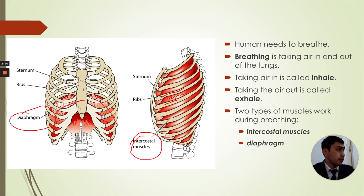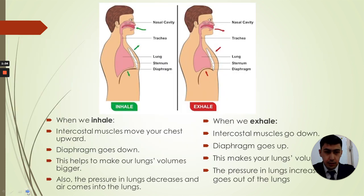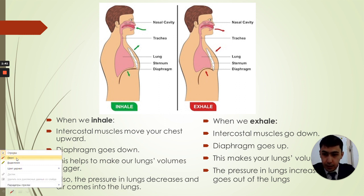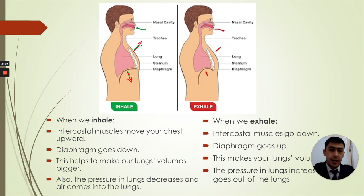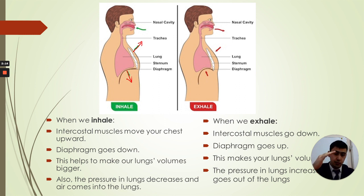So what happens when we inhale? The air comes in. First, the intercostal muscles move the chest up. The diaphragm goes down — the shape of the diaphragm is dome-shaped, but when we inhale it goes down and becomes flat. It contracts, goes down, and becomes flat.